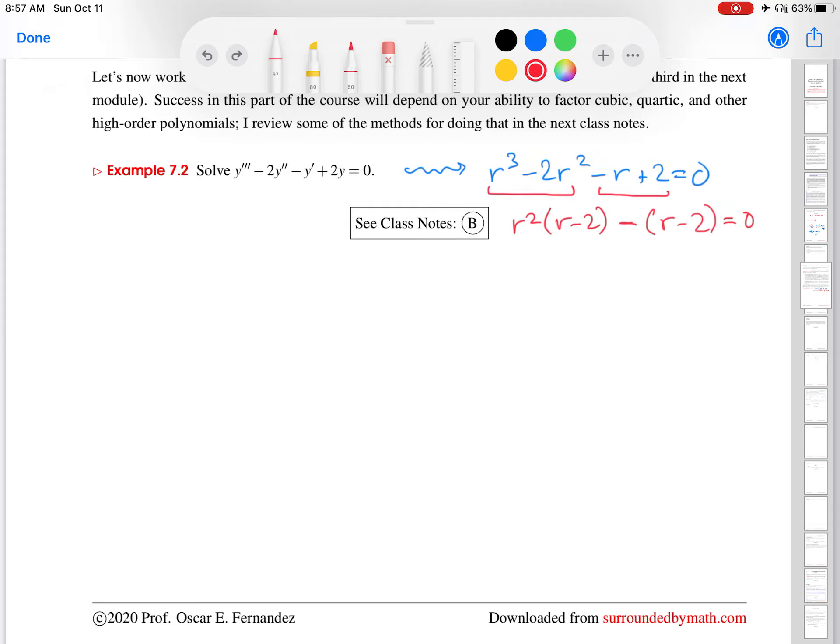So, and then one more step. So now I have these two terms in the equation. And I'm going to factor out r minus 2 from each term. So what I'm left with is the r squared and the negative 1 that's here. So r squared minus 1. Great. And then what do you know? I have a difference of squares here. So I'm going to factor that. r minus 1, r plus 1.